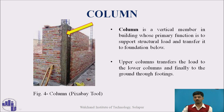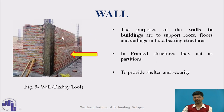Next is the column. This vertical member in a building has the primary function of supporting a structural load and transferring it to the foundation. Upper columns transfer the load to lower columns, and the function of a column is to resist the load coming from a beam. Next is the wall. The main function of a wall is to provide shelter or security — to support the roofs, floors, and ceilings in load bearing structures, and in frame structures, walls are considered as partition walls.